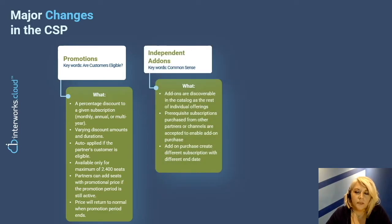Another change is add-ons. Add-ons are renamed as independent add-ons, and this is because now they are discoverable in the product catalog like the rest of the individual products. Microsoft runs a prerequisite control to check if the customer has an active-based subscription and can actually buy this add-on. Even if it's bought by another partner, it's important to note that an add-on purchase creates a different subscription with different end dates.